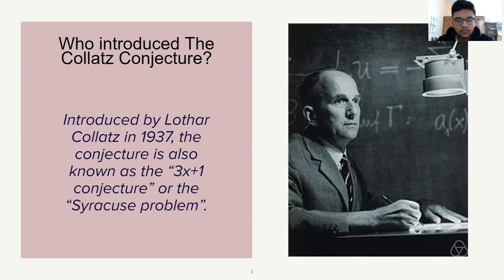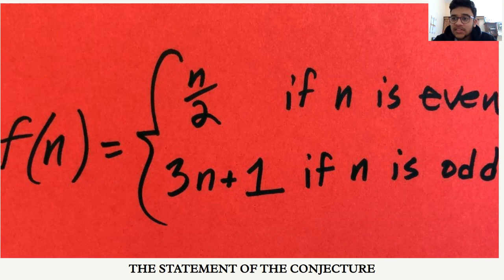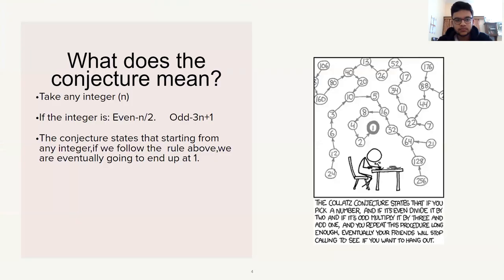The statement of the conjecture: take any integer n. If it's even, divide by 2, and if it's odd, multiply it by 3 and add 1. A conjecture is any opinion or conclusion formed on the basis of incomplete information.